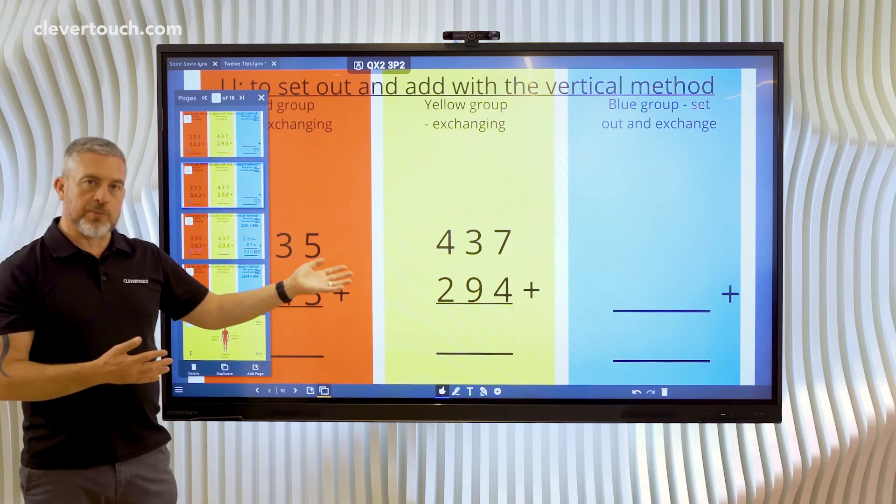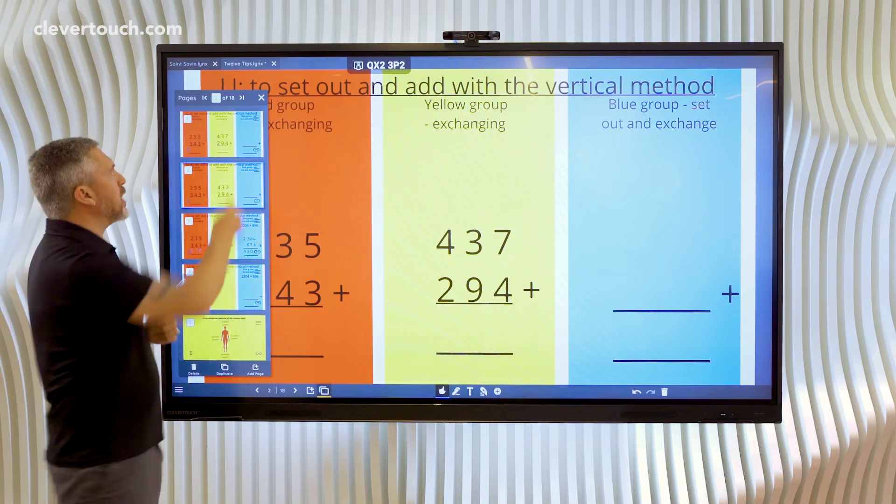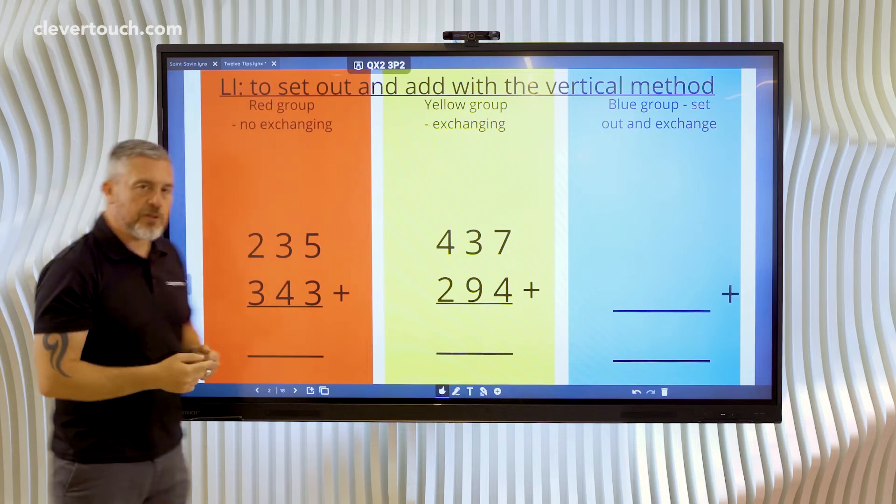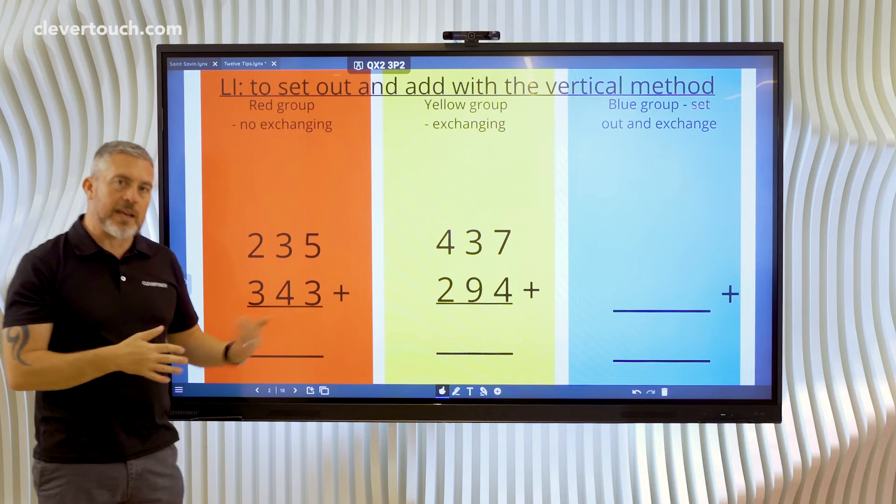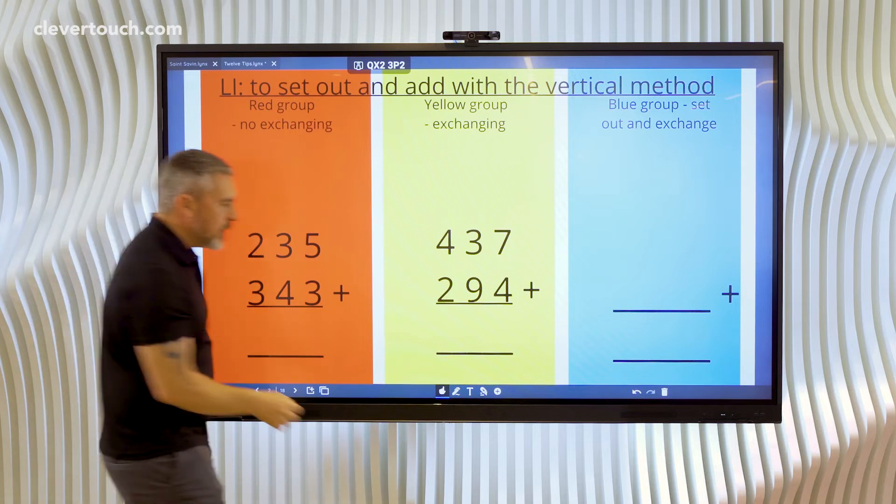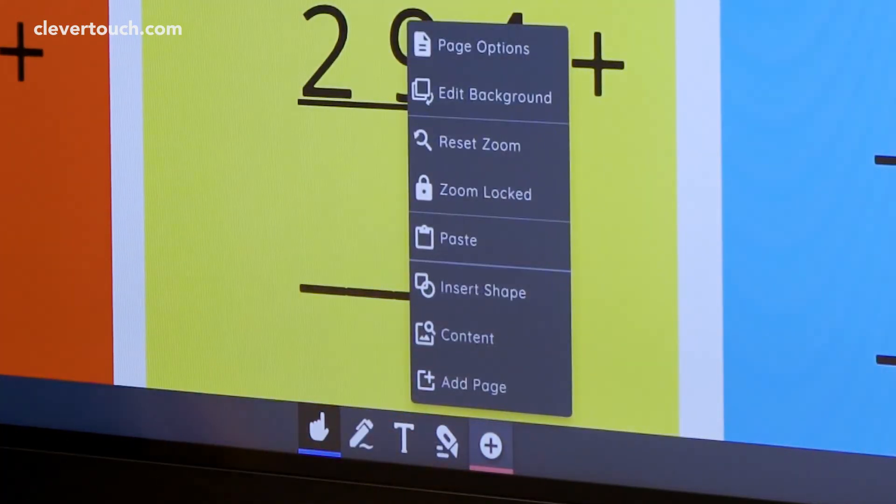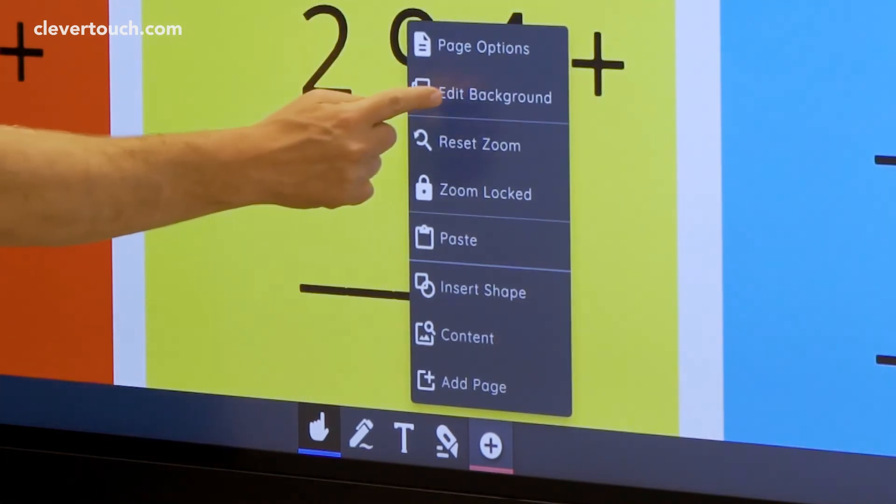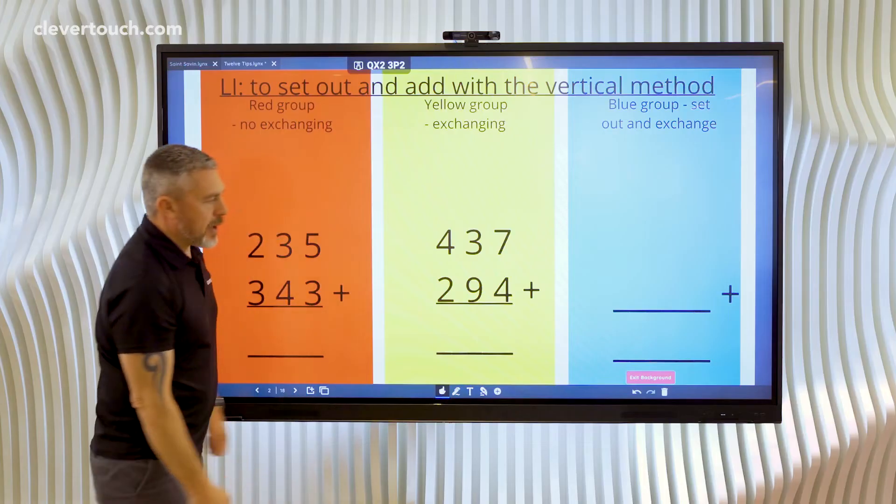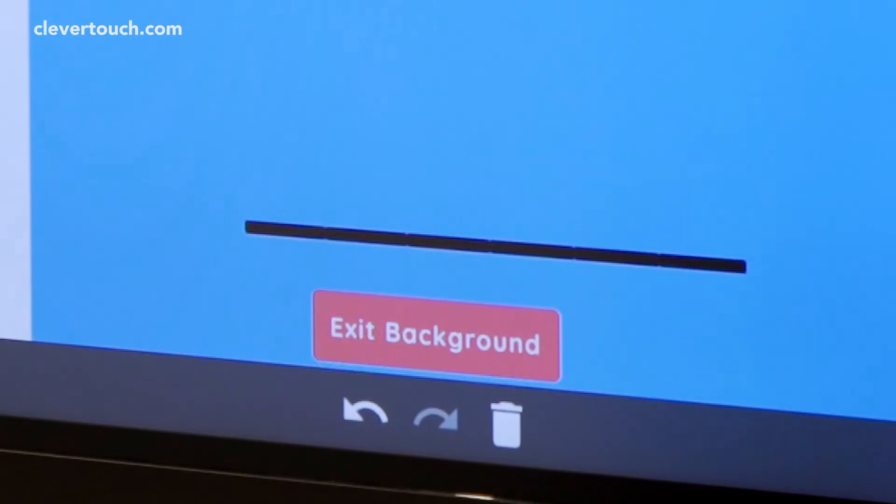But of course I want to change the sums this time, there's no point doing the same equation again. So all I have to do is go into the background layer and edit those text boxes. To do that it's an additional tool and we go into edit background and we can tell we're in the background again because it says edit background.